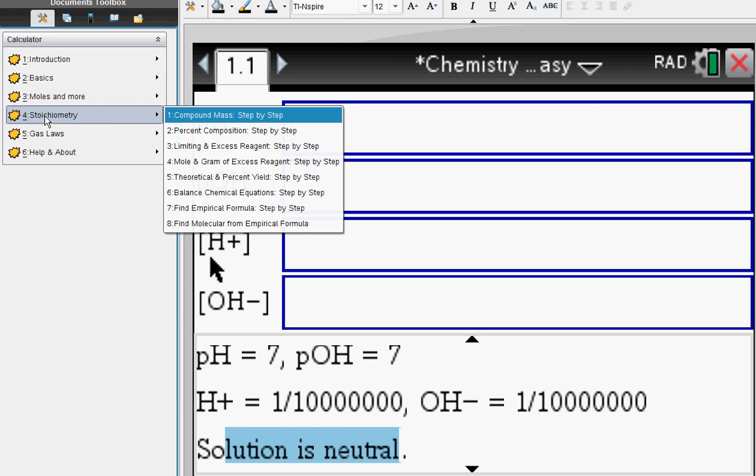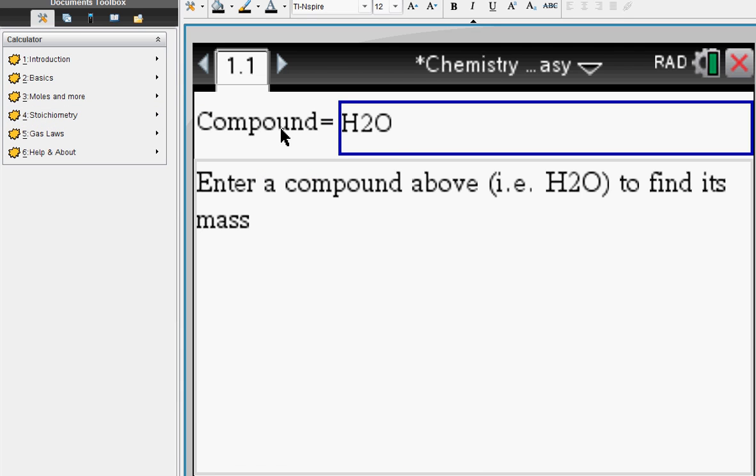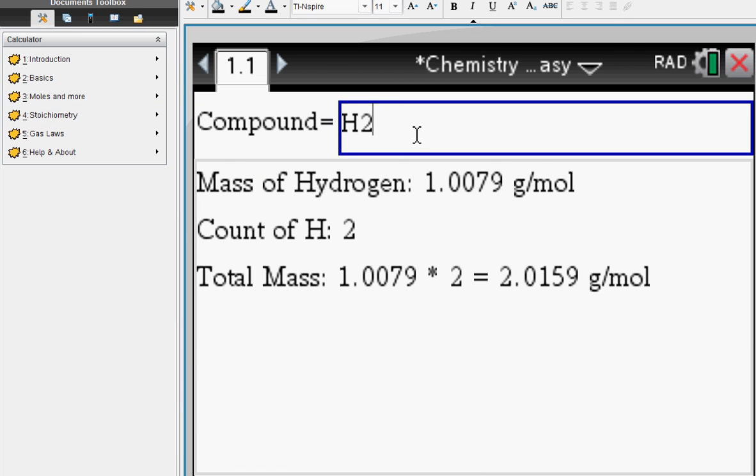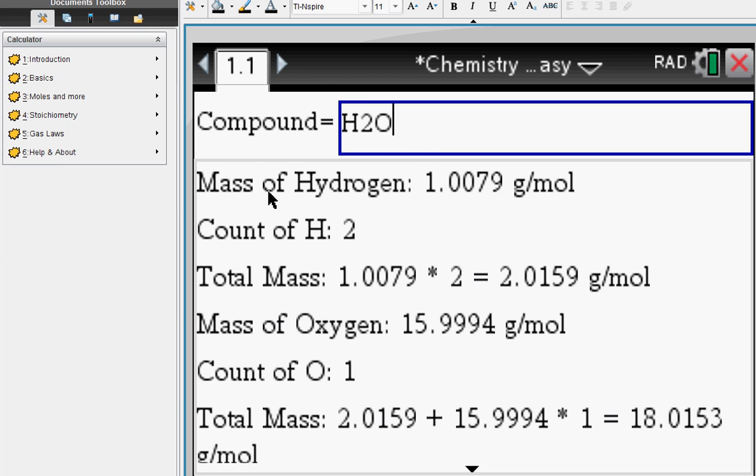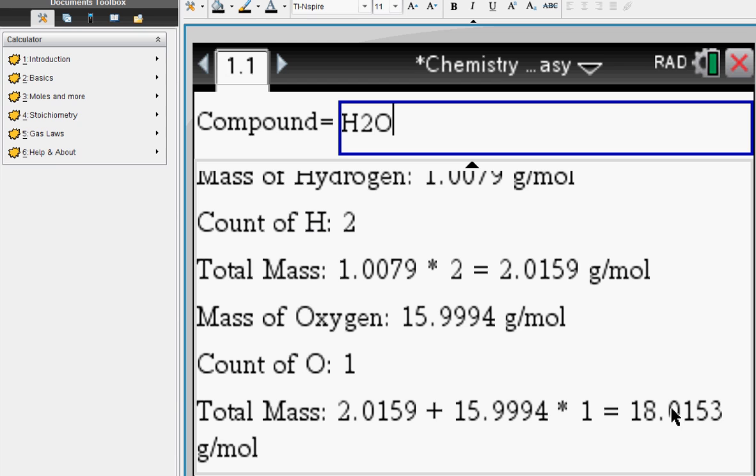Let's look at the stoichiometry compound mass. Say H2O - type in H number 2 and O, scroll up. The mass of hydrogen is this. Since you have two of them, the mass is doubled right here. Oxygen mass is this. You add up the two masses for a grand total - you get 18 grams per mole.